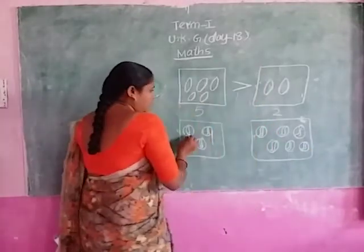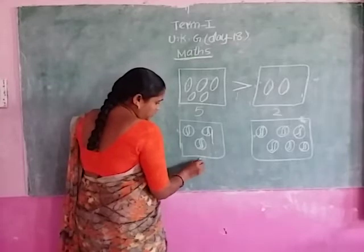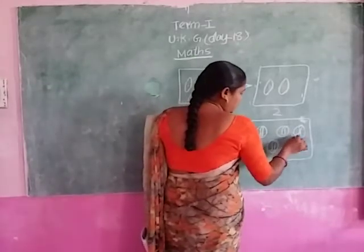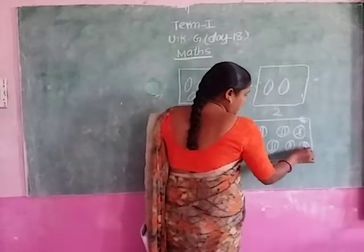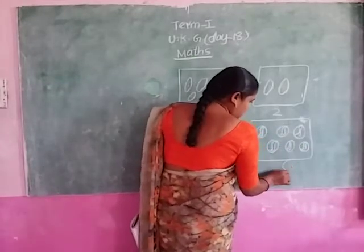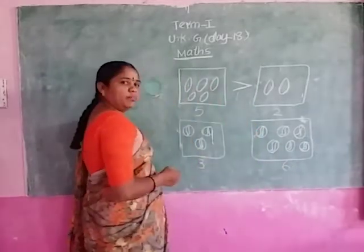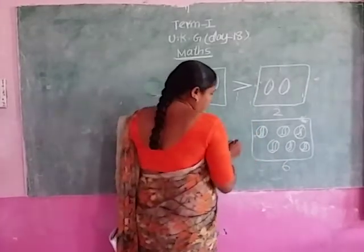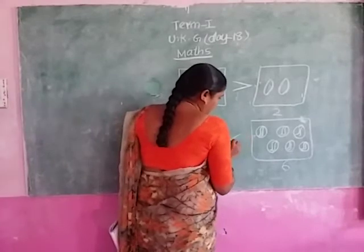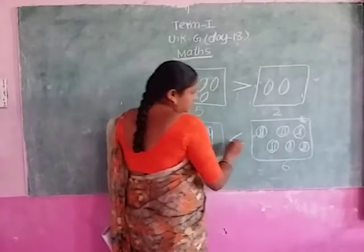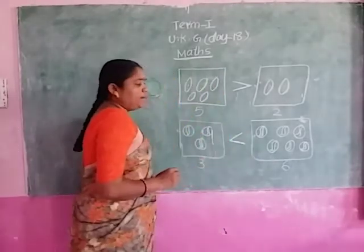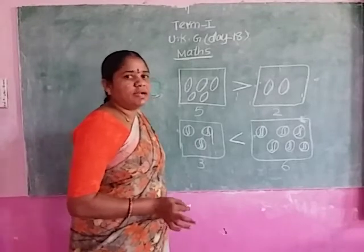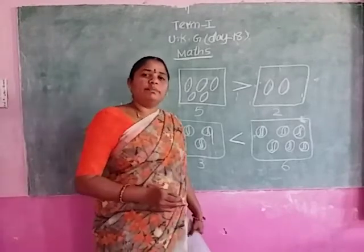Okay, here how many are there? One, two, three. Okay, here how many are there? 1, 2, 3, 4, 5, 6. Which is a greater number — here and here? This is an open box signal. This is a comparison of numbers. Which is a greater number — that's why we keep the open box signal.